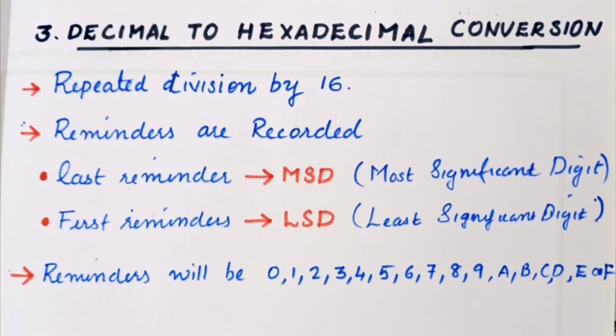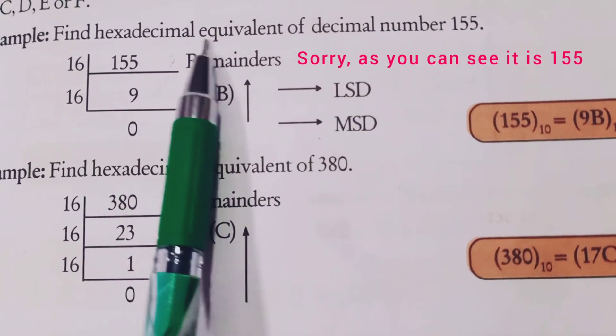The first remainder is LSD. An important point: in hexadecimal, remainders can be from 0 to 15. For remainders 0 to 9 we use the digits as usual, but for 10 to 15 we use alphabet letters. For example, 11 is represented as B, and 12 is represented as C. In this example, we find the hexadecimal equivalent of decimal 155.